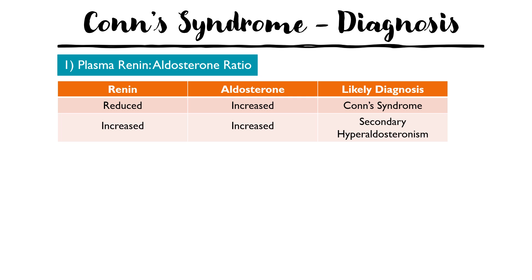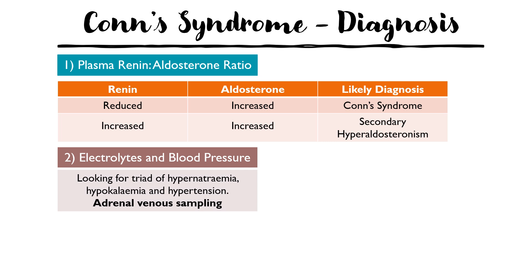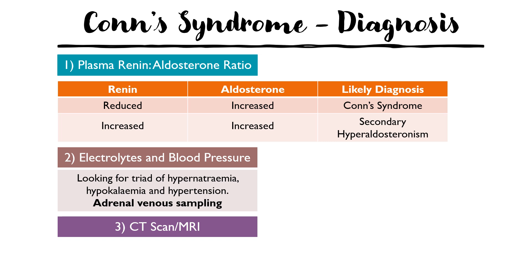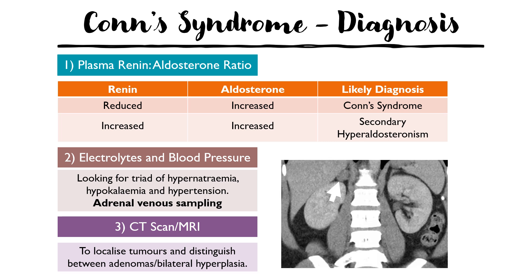Other investigations include electrolytes and blood pressure measurement, looking for the triad of hypernatremia, hypokalemia, and hypertension. Adrenal venous sampling may also be considered, measuring hormones from each adrenal gland to determine whether the problem is unilateral or bilateral. Imaging such as CT or MRI can help identify whether there is an adenoma or bilateral hyperplasia — for example, a scan may show an adrenal adenoma on the right side.